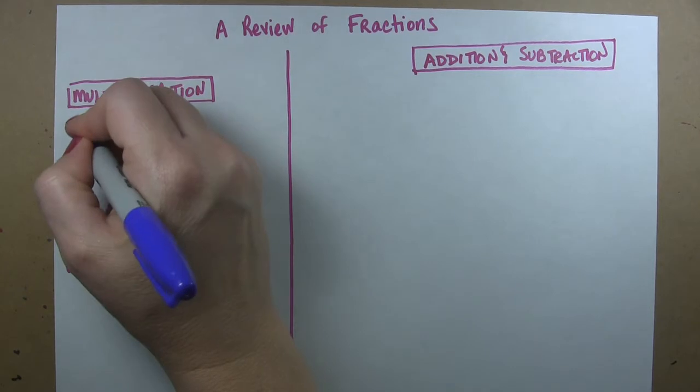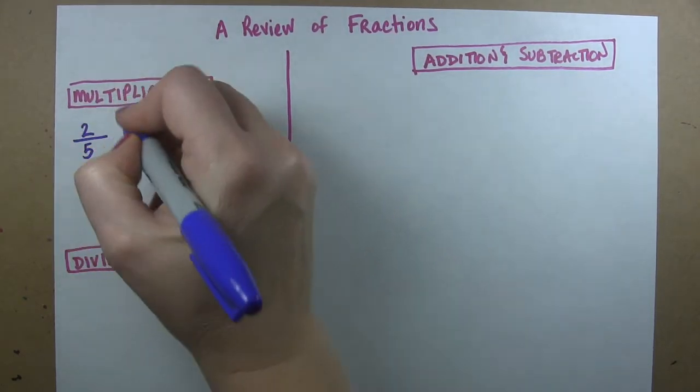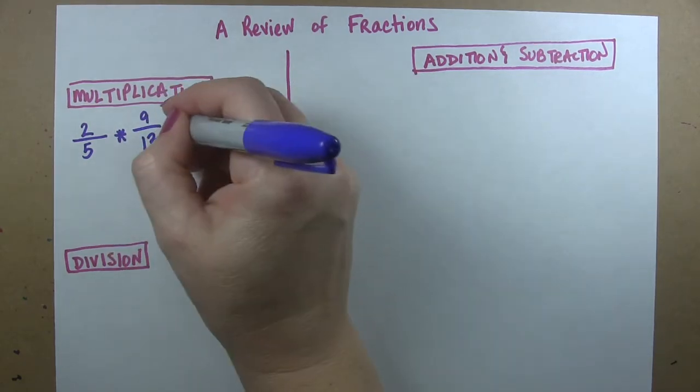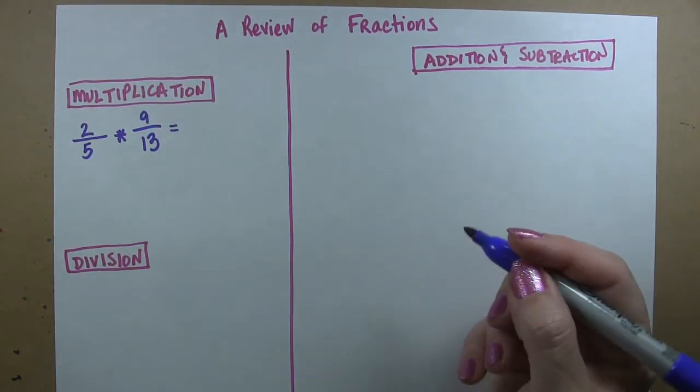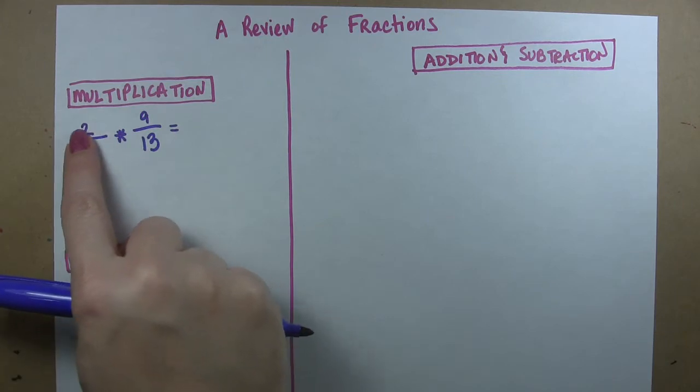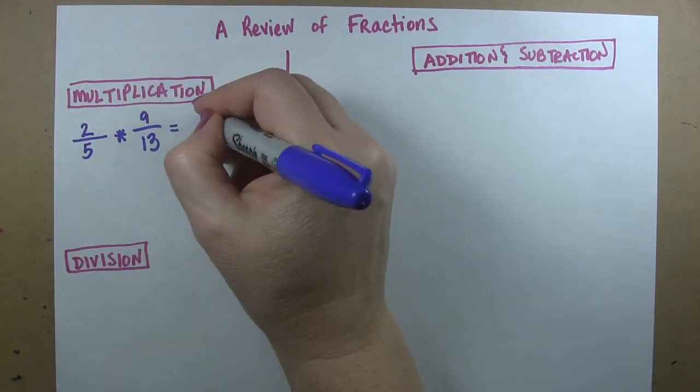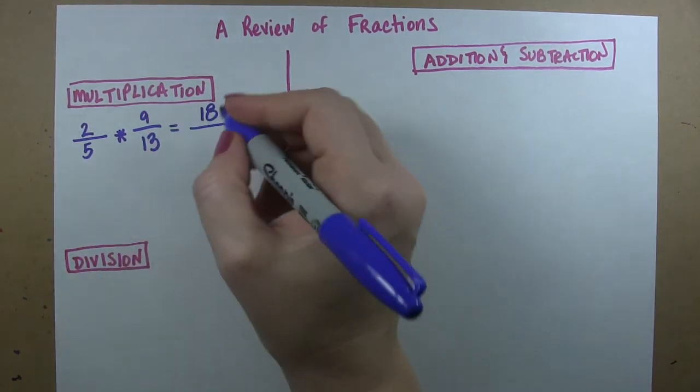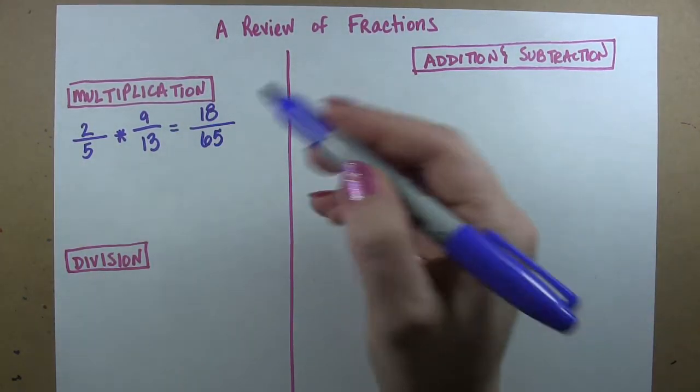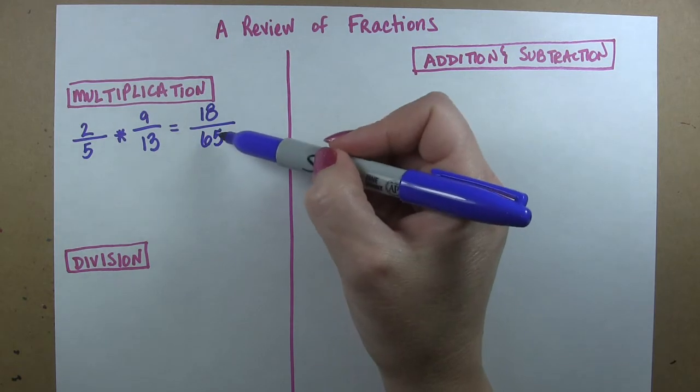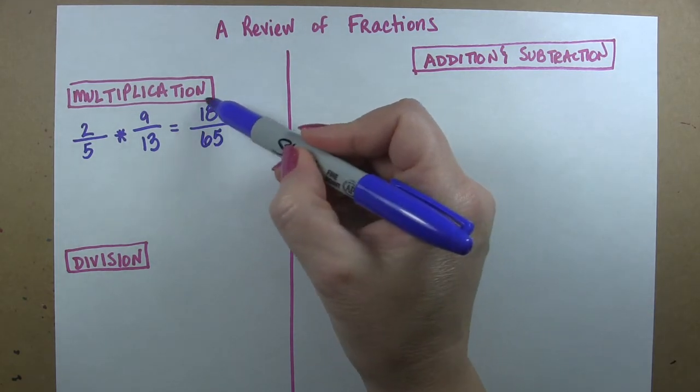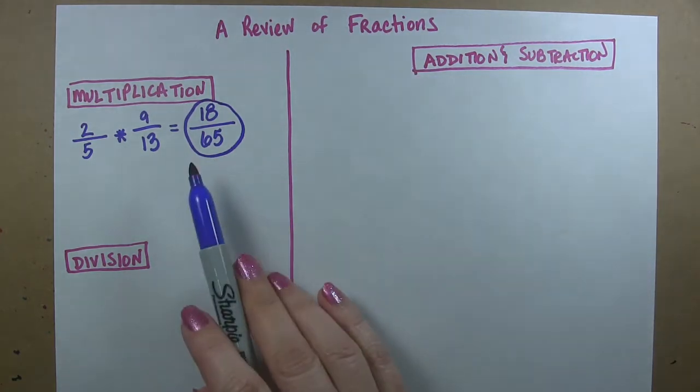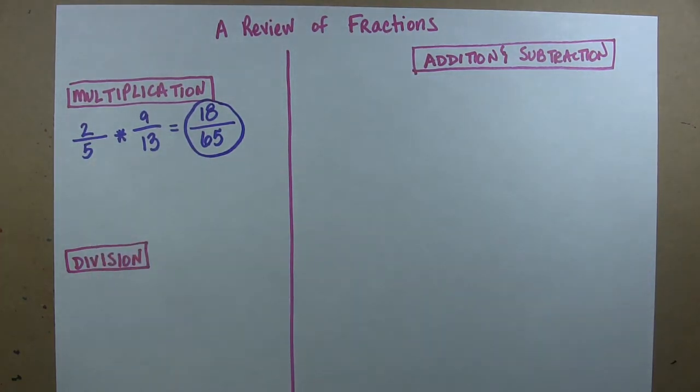So let's say that you're multiplying some fractions together and you're multiplying let's say 2 fifths and 9 thirteenths. In order to do this all you have to do is multiply across. So 2 times 9 is 18 and 5 times 13 is 65 and that is your answer. You might want to see if you can reduce it at all. It cannot be reduced in this case so we won't worry about that but that's all you have to do is multiply across.